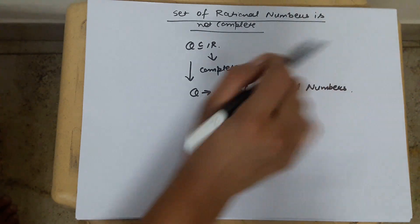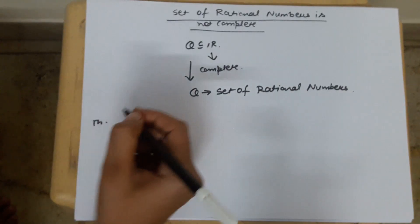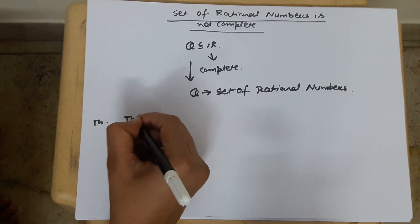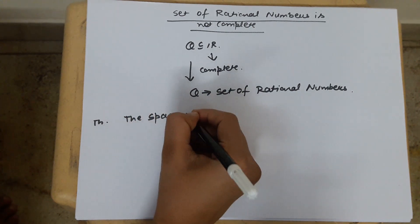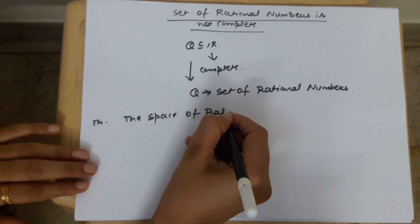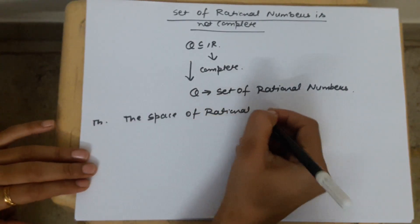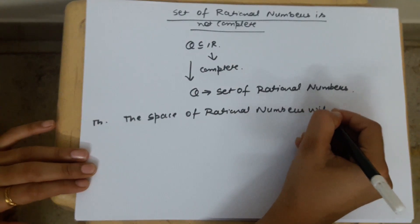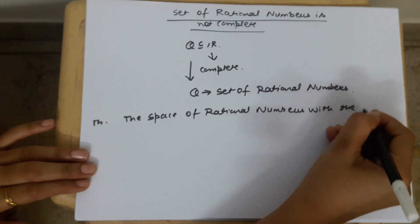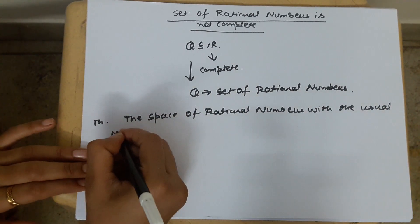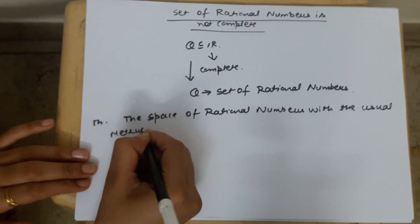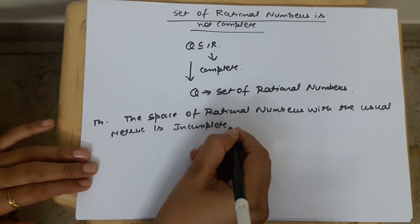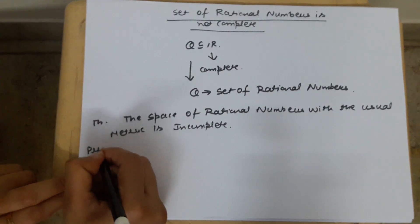So let's start today's video. The theorem statement is: the space of rational numbers with the usual metric is incomplete, meaning that it is not complete. So let's take the proof of this.